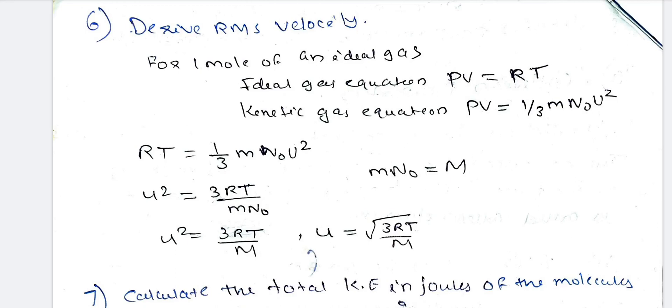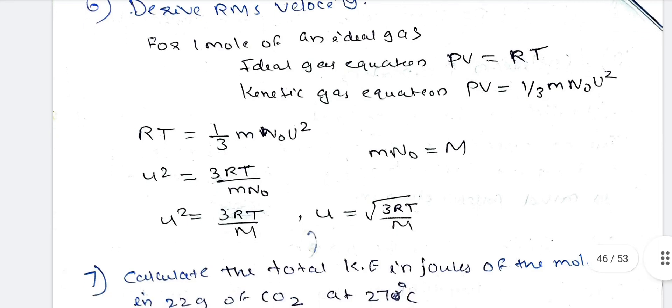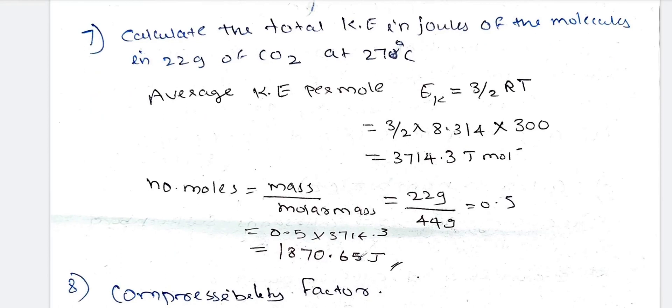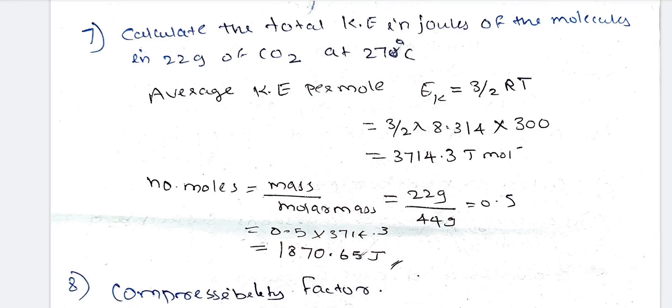The kinetic gas equation is PV = (1/3)mN₀U². Equating with RT: RT = (1/3)mN₀U². Solving, U² = 3RT / (mN₀). Since m × N₀ = M (molar mass), we get U² = 3RT/M, and therefore the RMS velocity U = √(3RT/M).